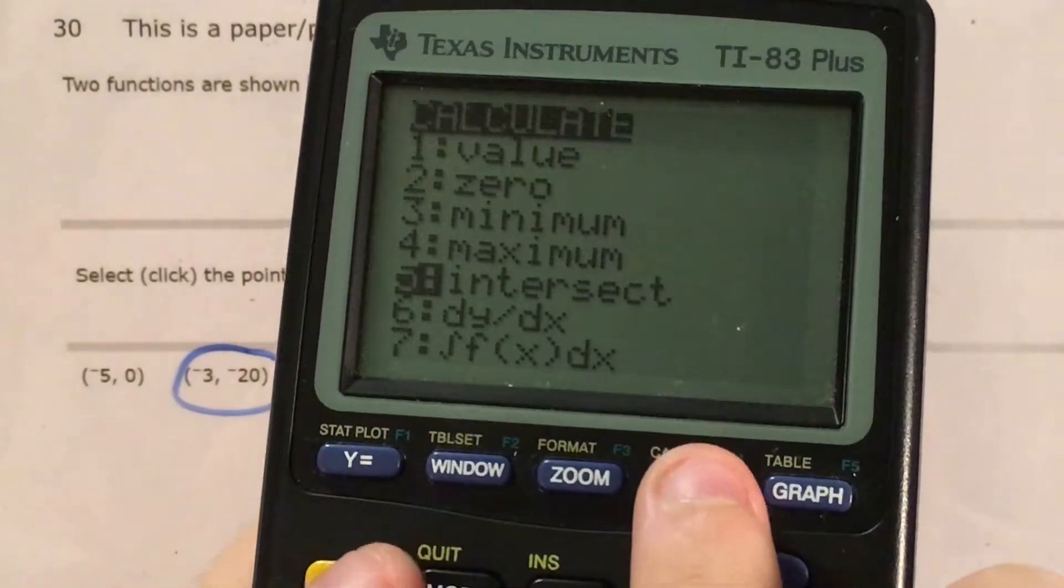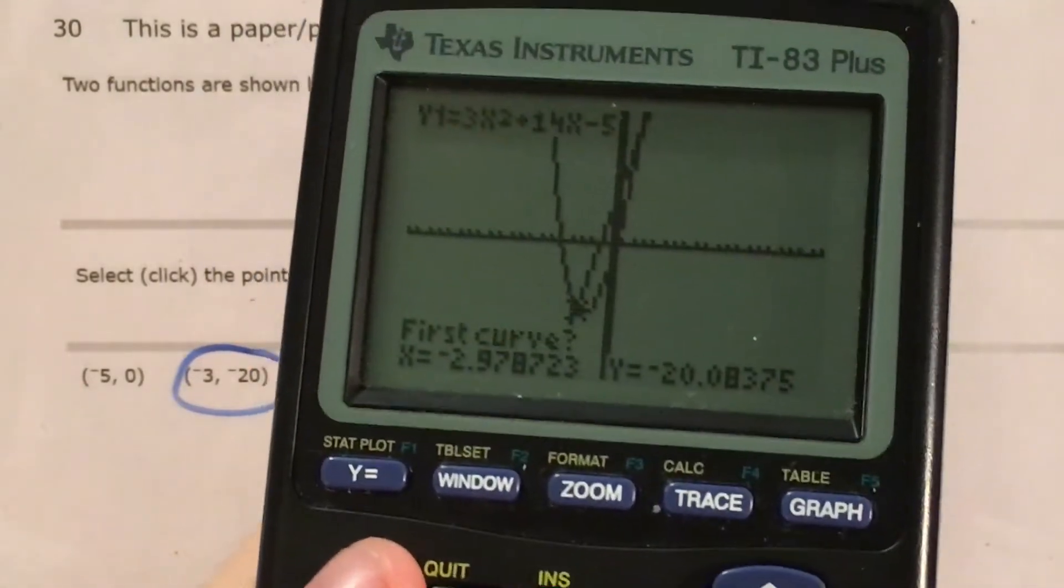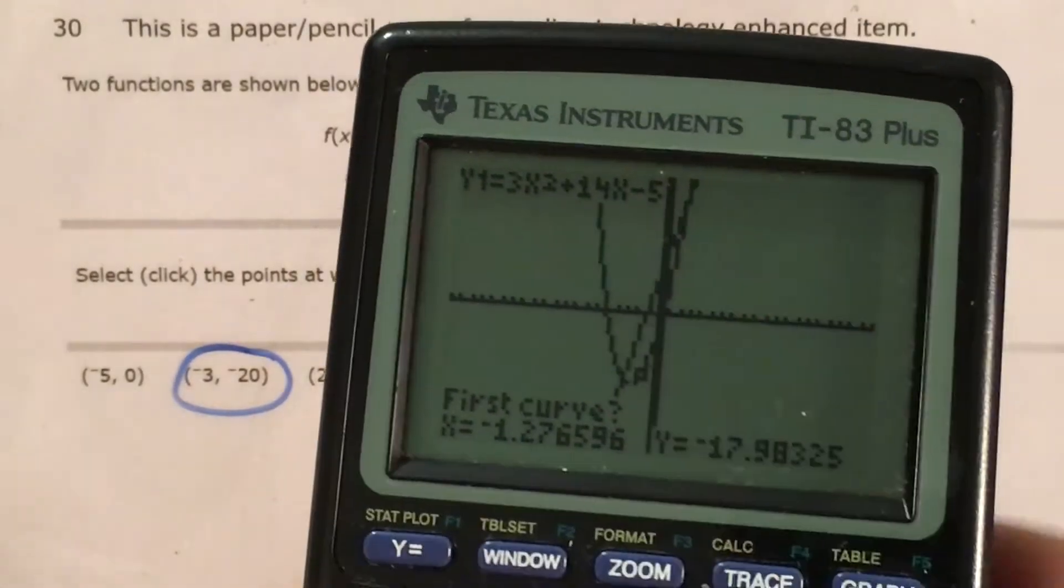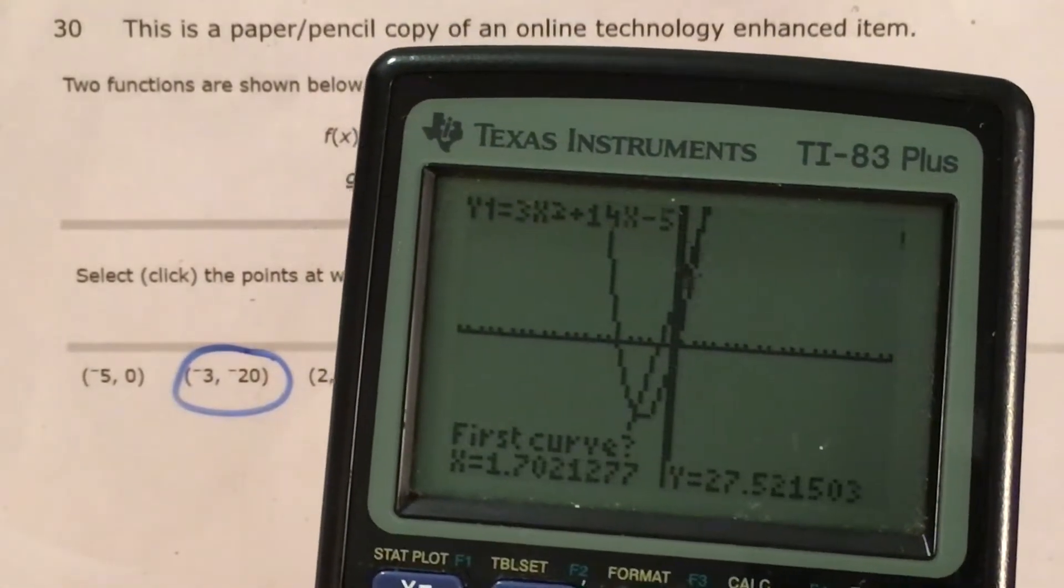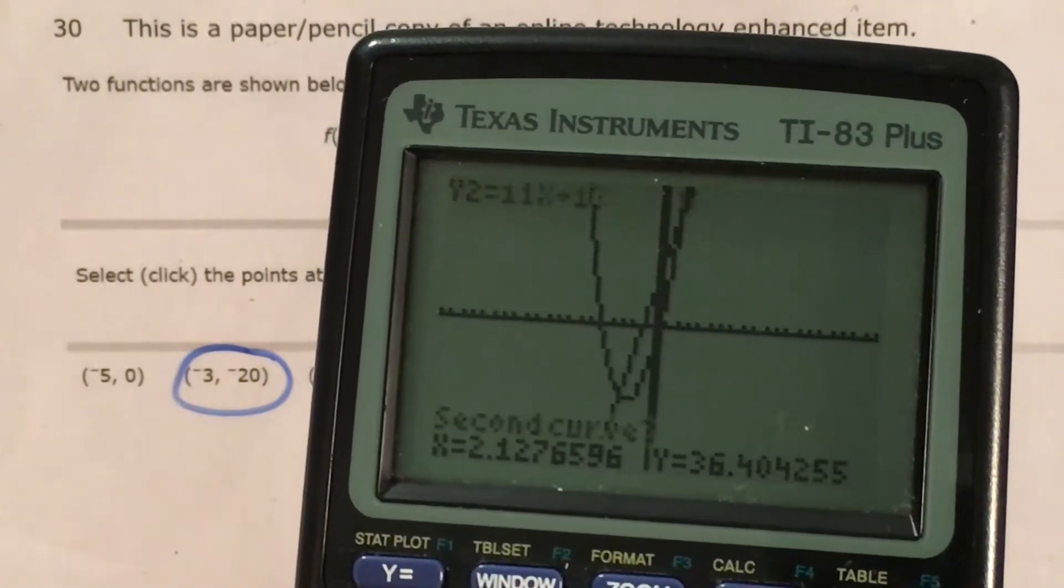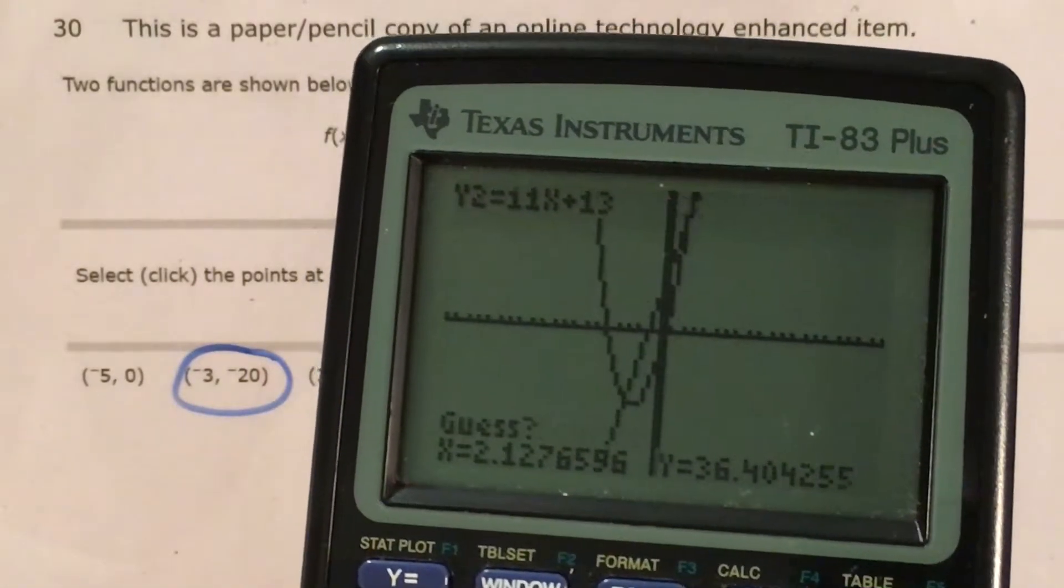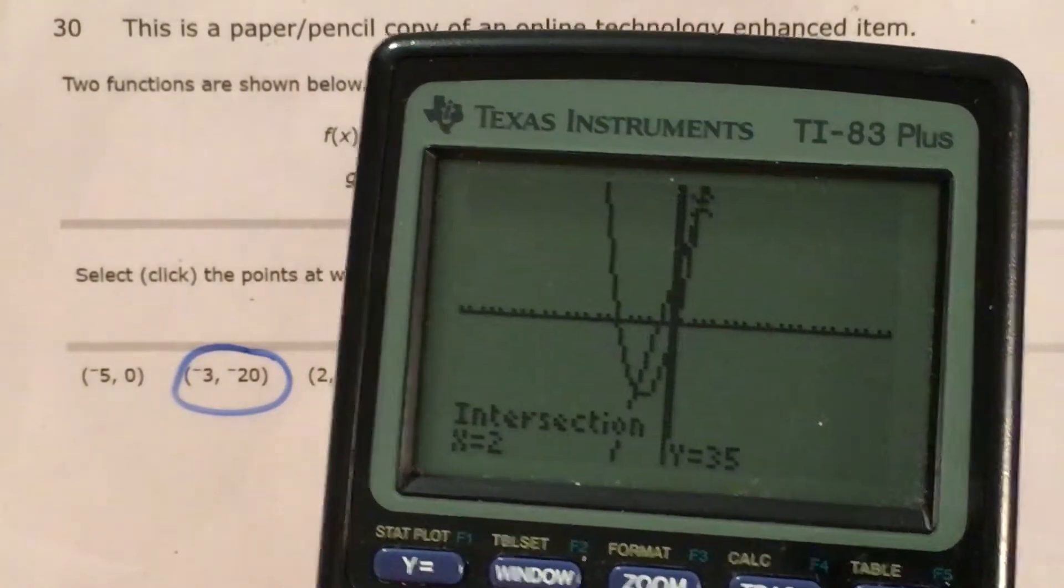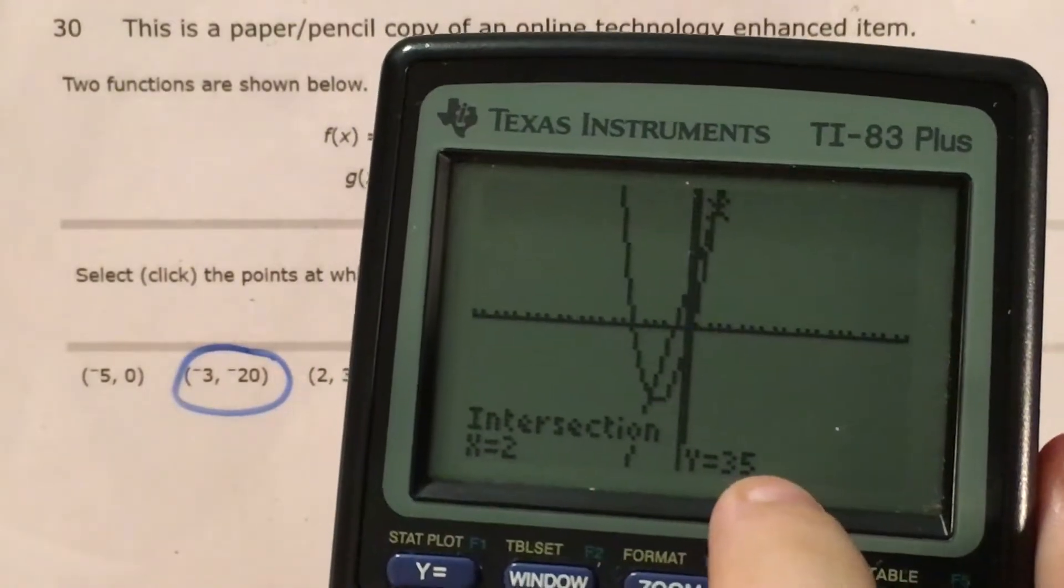And now I'm going to find the other point, because there are actually two of these intersections. So once again, I do second trace or second calc, go down to intersect, and this time my intersection is kind of up here a ways. So I'll make that my first curve. Second curve is still close, I guess. And it tells me x is 2 and y is 35.